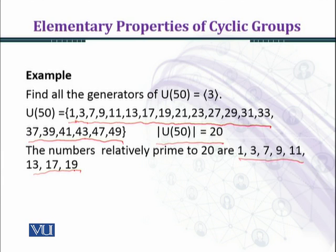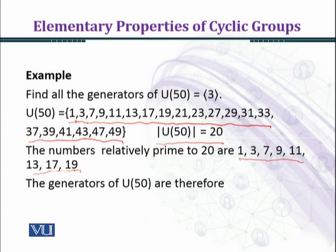Now here in U(50) we know that there are total 20 elements, and we are seeing which elements are relatively prime up to 20. The generators of U(50) are therefore 3 raised to power 1, we will assign them 3 powers.